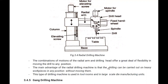The main advantage of the radial drilling machine is that drilling can be carried out on heavy workpieces in any position without moving them. We do not have to clamp and unclamp the workpiece repeatedly — we only need to move the radial arm. This type of drilling machine is used in tool rooms and large-scale die manufacturing units.